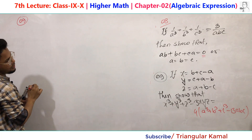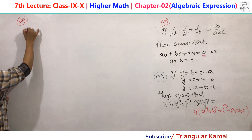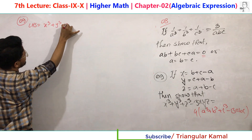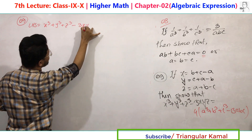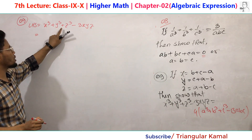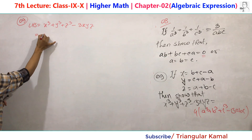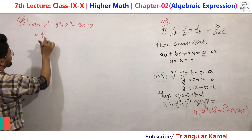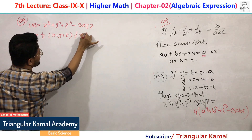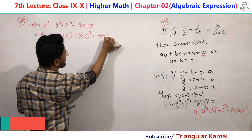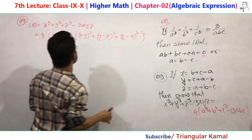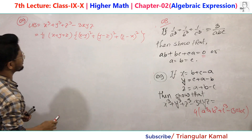First, on the left hand side, we write: x³ + y³ + z³ - 3xyz. We know there is a formula for x³ + y³ + z³ - 3xyz, so we apply the corollary form. This gives us: (x + y + z) times one-half of [(x - y)² + (y - z)² + (z - x)²]. This is the corollary form of x³ + y³ + z³ - 3xyz.